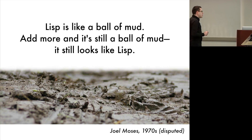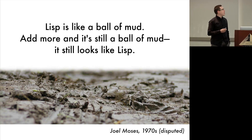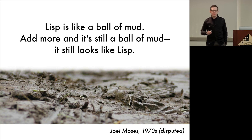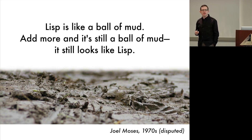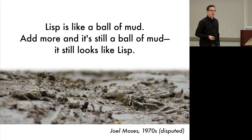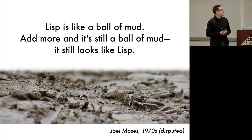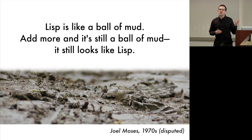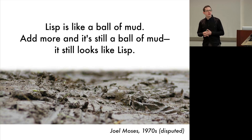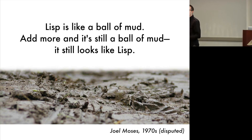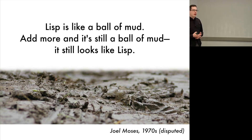There is some dispute as to whether Joel Moses actually said this. There is also some confusion as to whether this was meant as disparagement or a compliment of Lisp. You could look at it one way and say this is bad because Lisp is always a big ball of mud, and no matter what structure you try to add, you're still going to have a ball of mud when you're done. But you could also look at this as a positive description of Lisp — that Lisp is infinitely malleable, and anything you add to it is going to retain the same fundamental structure of the language.